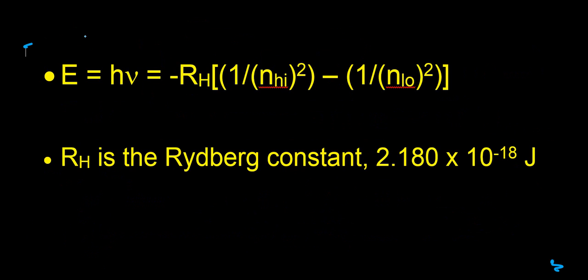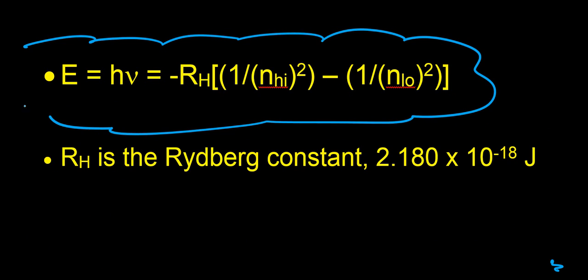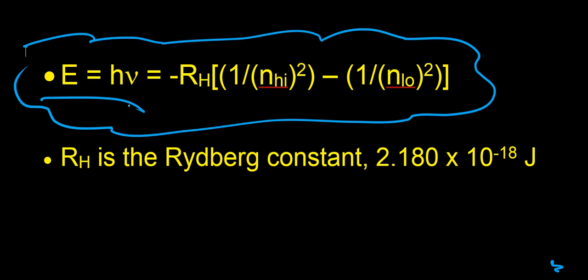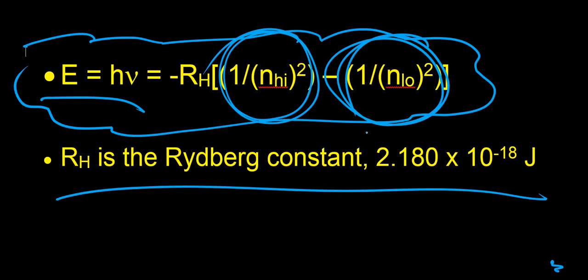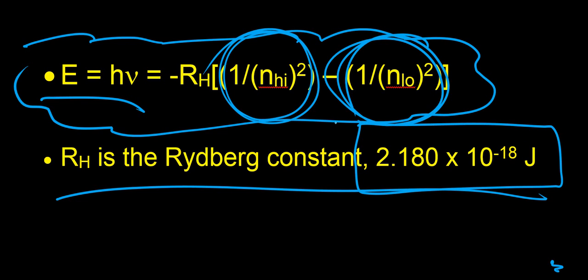Another equation to find the energy uses the Rydberg constant. The equation E = hν can also be written as E = –R_H × (1/n_high² – 1/n_low²), where n_high is the energy level the electron started at in its excited state and n_low is the energy level it drops back down to. The Rydberg constant R_H is 2.180 × 10⁻¹⁸ joules.